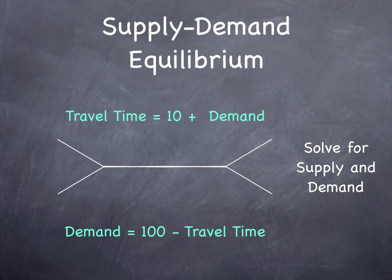We talked about the trip distribution model, or the destination choice model. People's choices of destinations depended upon travel time in the network, but the travel time in the network depends on people's choices of which routes to take. We have to solve this whole system iteratively.